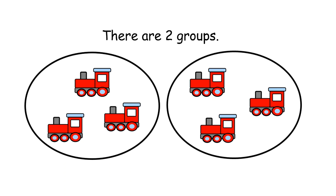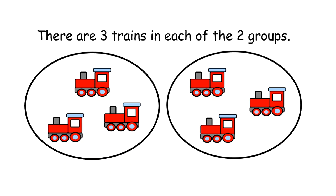There are two equal groups. There are three trains in each of the two groups.